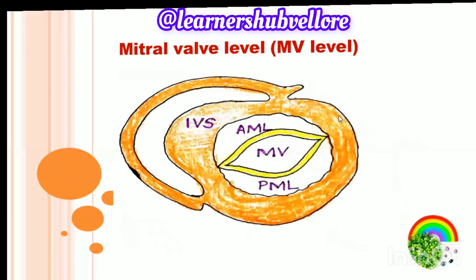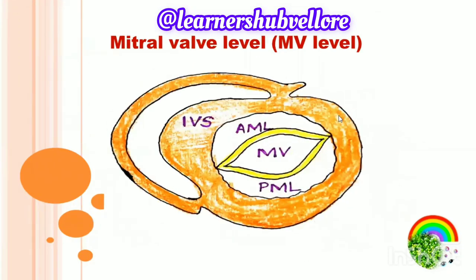Going to the mitral valve level, the structures seen are the interventricular septum, anterior mitral leaflet, and posterior mitral leaflet. Here the mitral valve orifice will be seen as a fish mouth — similar to how it looks when a fish is opening its mouth.